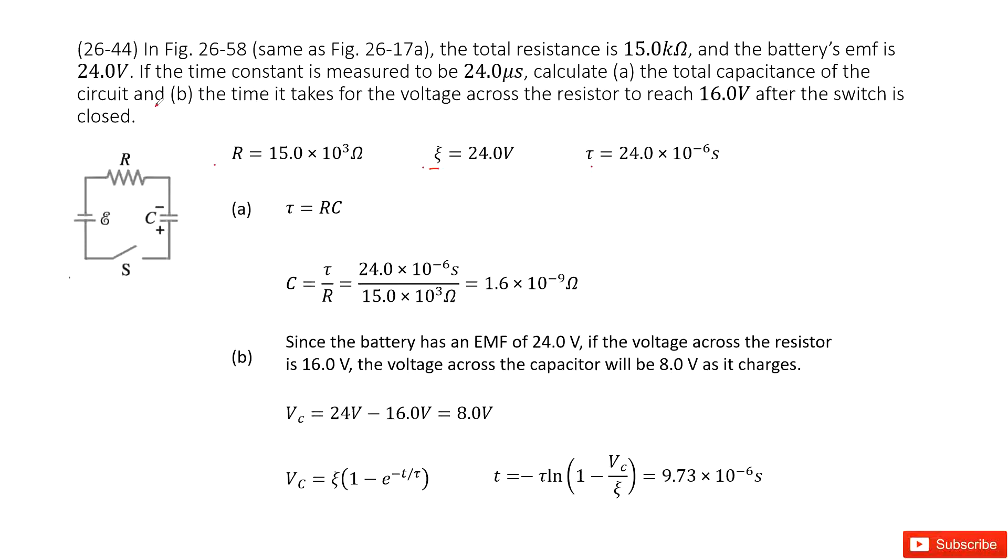This is very straightforward. We can see the time constant equals R times C, so C equals tau divided by R. Input the given quantities, and we get the answer there.